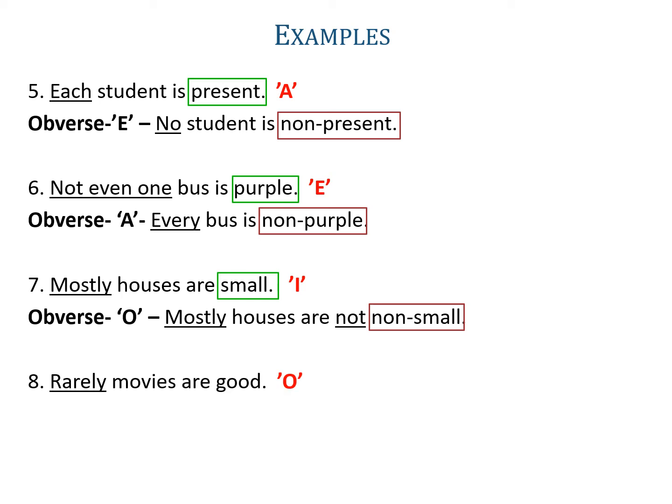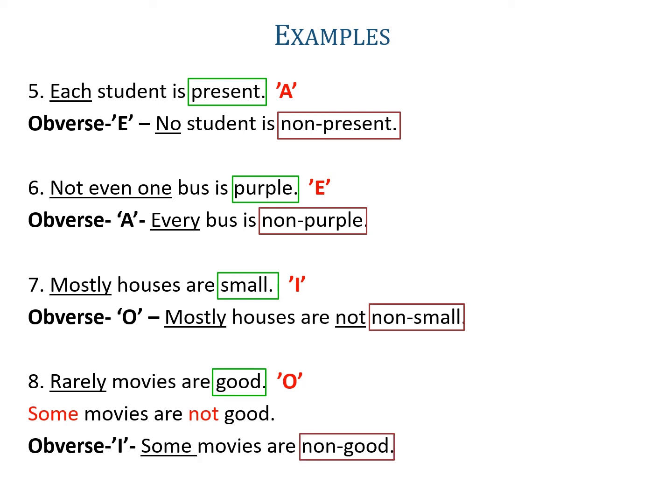Example eight: 'Rarely movies are good.' The word rarely is used, so it is an O-proposition, but rarely with not doesn't sound grammatically correct. So we transform this into the basic symbolic form, that is 'some S is not P' — 'some movies are not good'. Now you can write the obverse of O, that is I, which is 'some S is non-P'. The predicate is good, so its complementary is non-good. So we write it as 'some movies are non-good'.